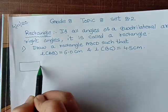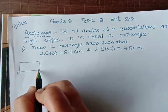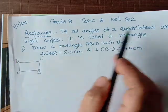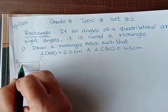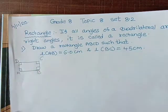What is the name of rectangle? A, B, C, and D. Now if all angles of a quadrilateral are right, that means all the angles should be right, and they have given their measures.